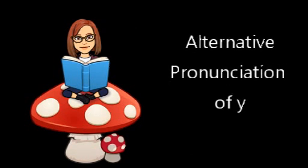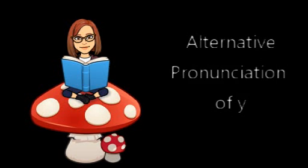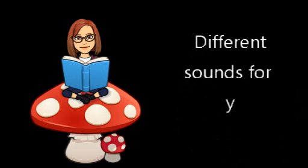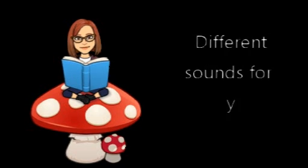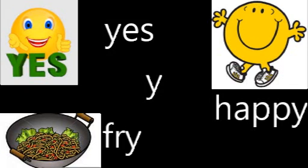And now moving on to the main part of our lesson, we're going back to our alternative pronunciations of the Y grapheme. We're going to quickly recap over what we did in the previous session. We've got the Y for yes, which is at the beginning of the word. We've got the E for happy, which goes at the end. And then we've got the I for fry, which goes at the end of our words.